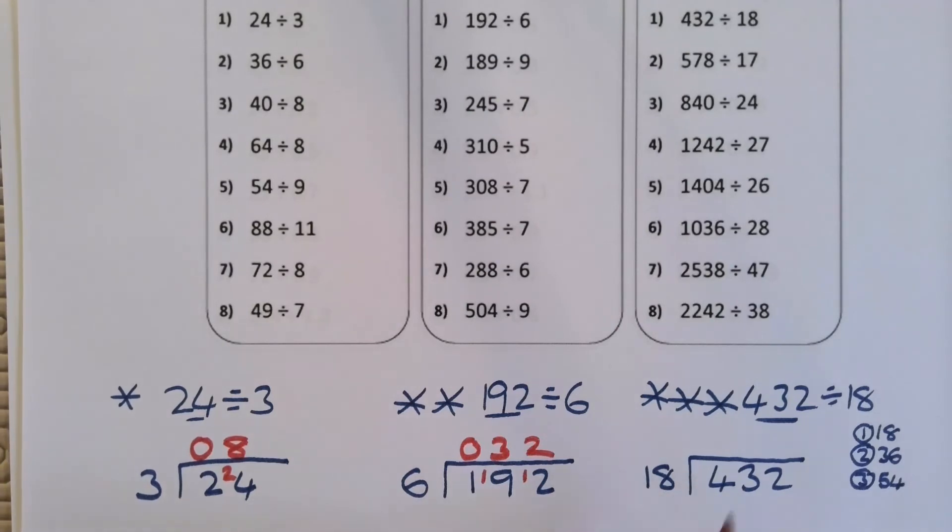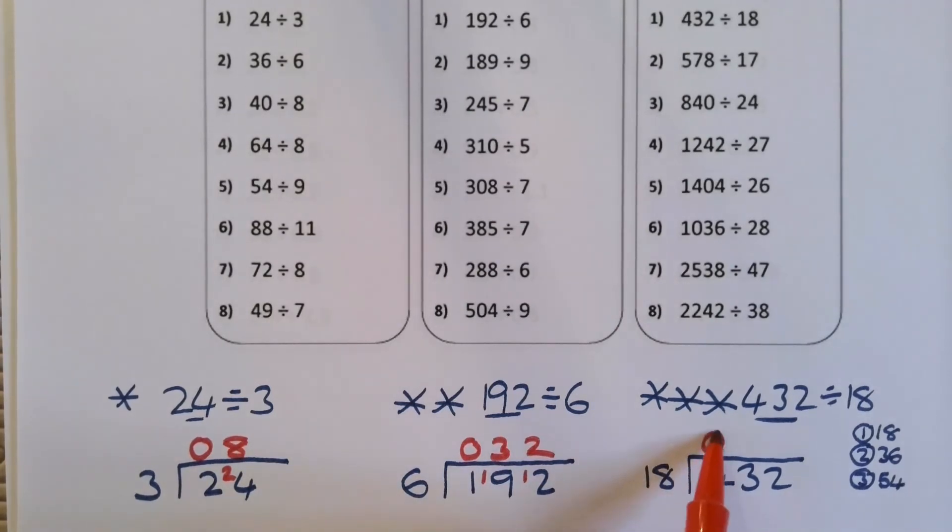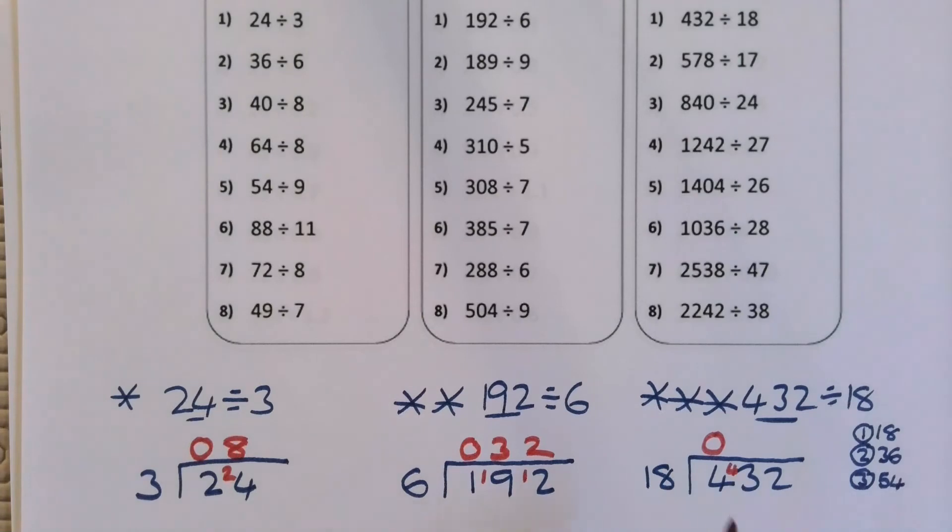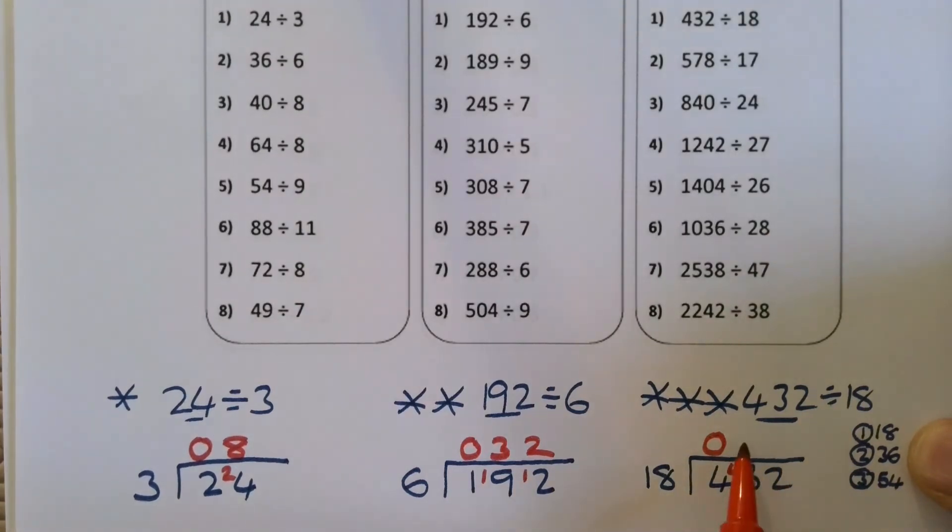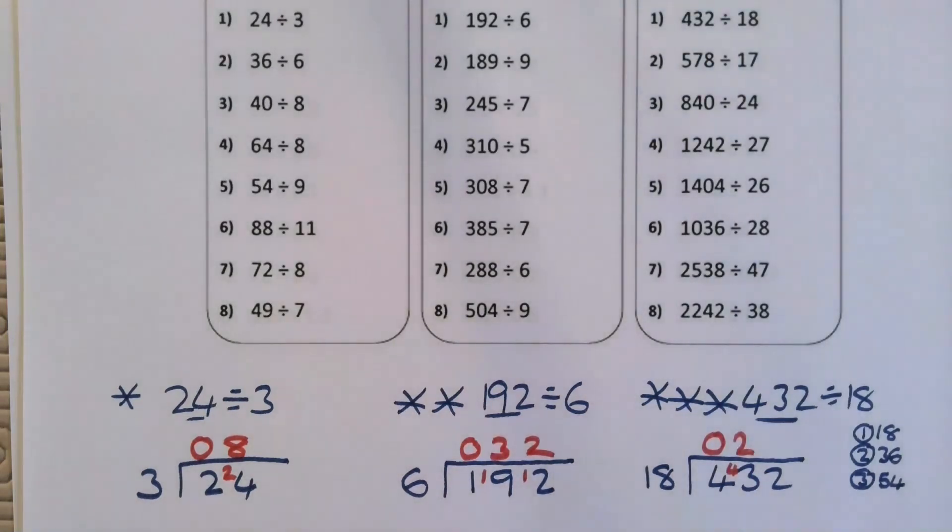So 18s into four, well that doesn't go, we'll carry the four over. So 18s into 43 now, we've got our times tables down the side here to help. The answer's going to be two, isn't it? So count on from 36, 37, 38, 39, 40, 41, 42, 43. So there's seven left over, so it's 72.